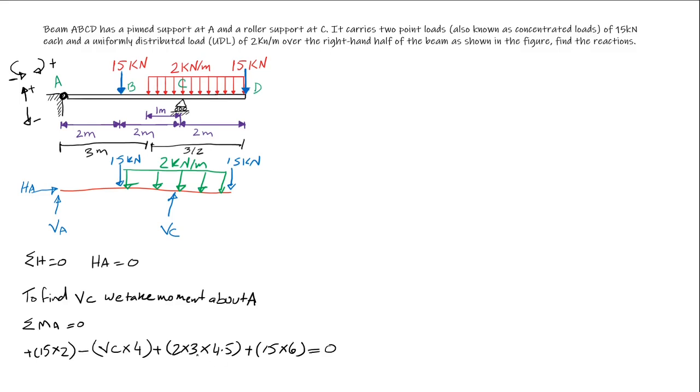15 times 2 is 30, minus 4 VC, plus 27, plus 15 times 6 is 90. If you plug that into the calculator, that should give you VC equal 36.75 kilonewton, and that is positive because it's acting upward as you could see from here.